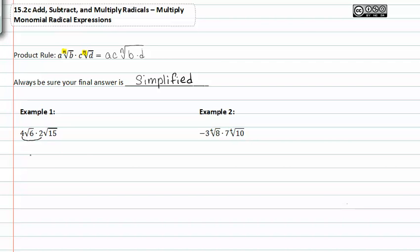We'll go ahead and multiply the first two values, the values in front of the radicals together, noticing first that our indexes match. Now I'm going to multiply what's inside the radicals together. Six times fifteen is ninety.